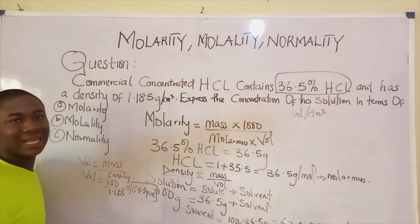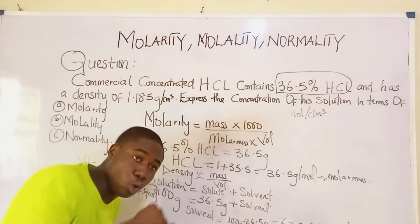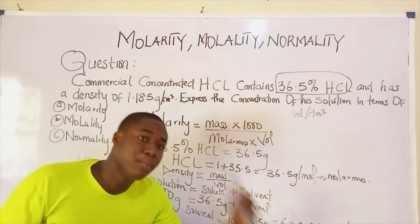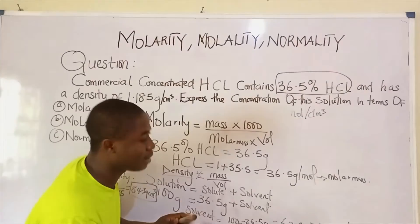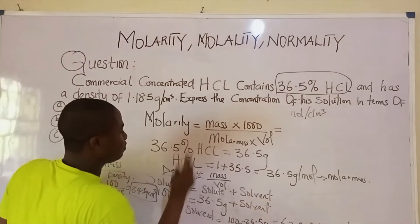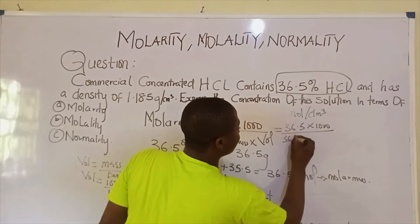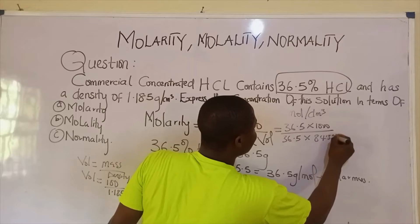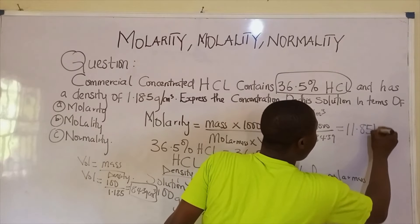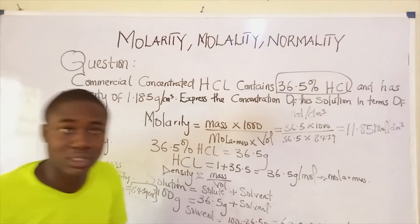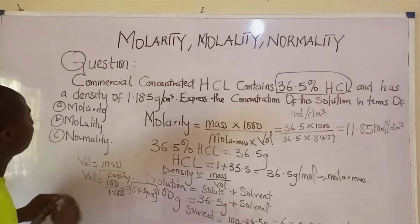Now we input the parameters. The mass of the solute (HCl) is 36.5 grams, and the mass of the solvent is 63.5 grams — keep this for molality. Molarity = (36.5 × 1000) / (36.5 × 84.39) = 11.85 moles per dm³ (or 11.85 M). This is the molarity of the solution.